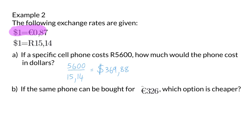In this exchange rate, one dollar is equal to only 87 cents in euros. That means that the euro is the stronger currency. In the second exchange rate, one dollar is equal to 15 rand 14, and that means that the dollar is the stronger currency than the rand.